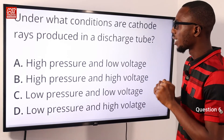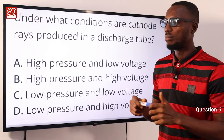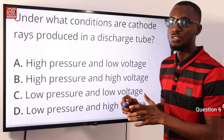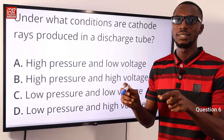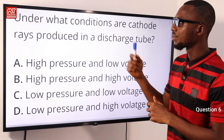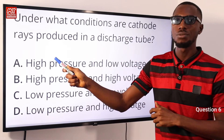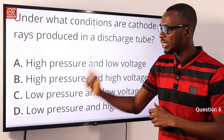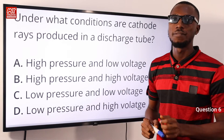Question 6: under what conditions are cathode rays produced in a discharge tube? The tube is a vacuum, and the conditions are low pressure and high voltage. High voltage is applied to the two metal plates so that rays are produced from the cathode — that is why they are called cathode rays. The correct option is option D: at low pressure and high voltage.